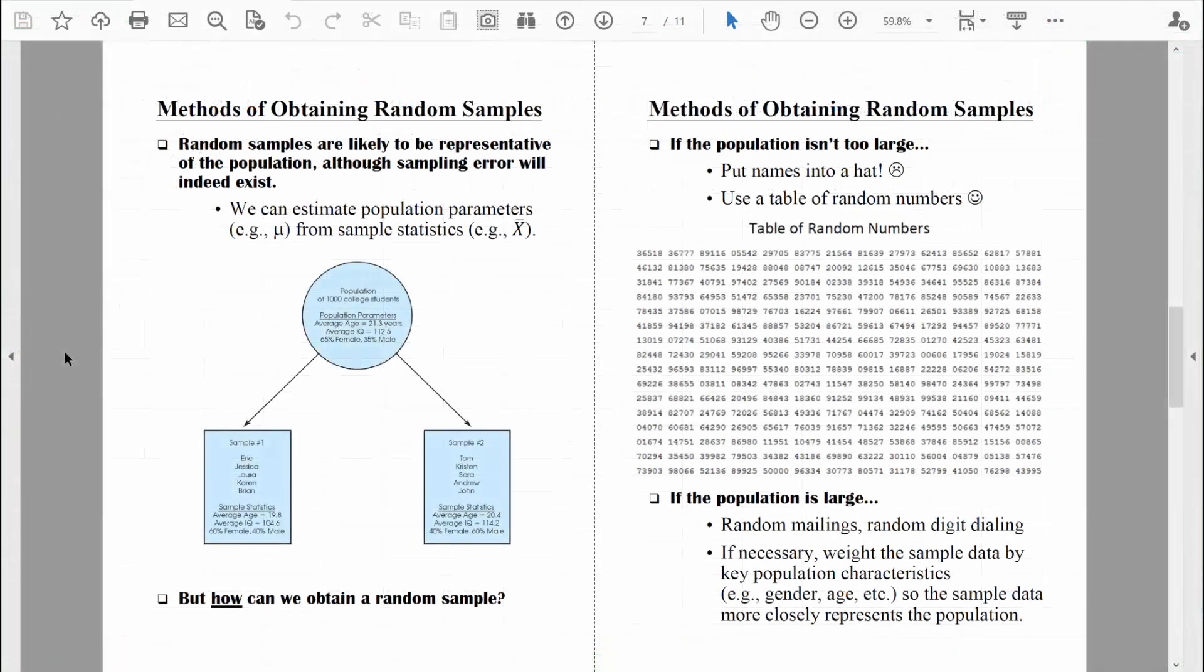Sometimes the populations that we're dealing with are extremely large. And when that's the case, sometimes researchers use other methods. For example, they might use random mailings.